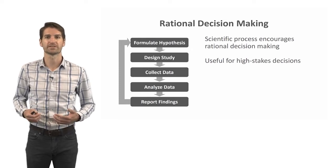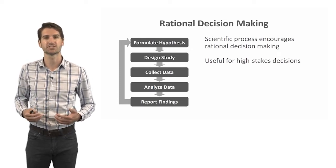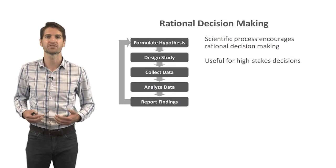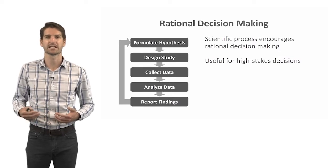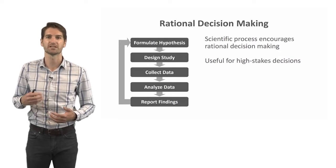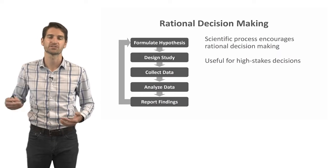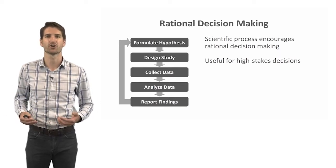The scientific process is as follows: first, you formulate a hypothesis; then you design a study to test that hypothesis; you collect data to test that hypothesis; analyze those data; interpret the data; report the findings; and possibly repeat that cycle again.